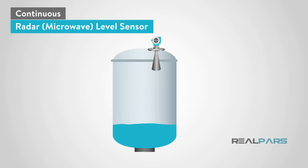Radar, or microwave, is also a continuous level sensor. These sensors transmit microwaves by an antenna on the radar sensor. The product that's being sensed reflects these microwaves back to the antenna, and the time from emission to reception of the signal is proportional to the level of the product.